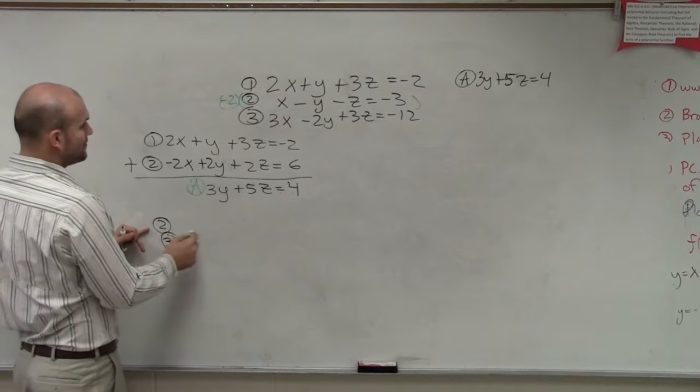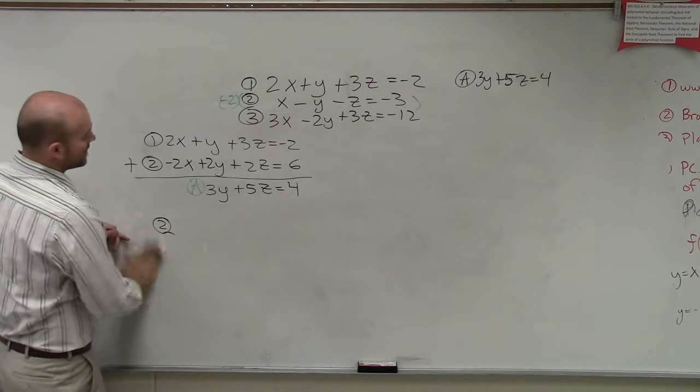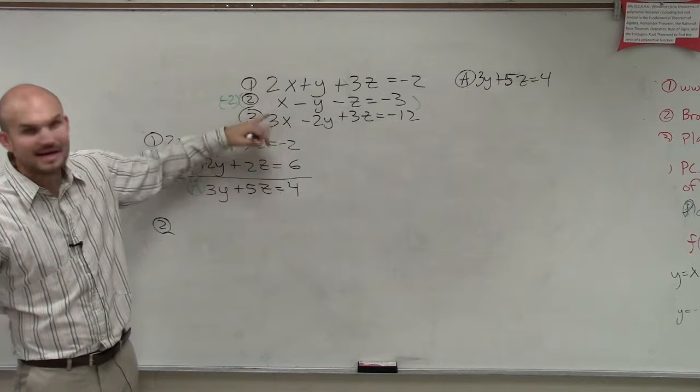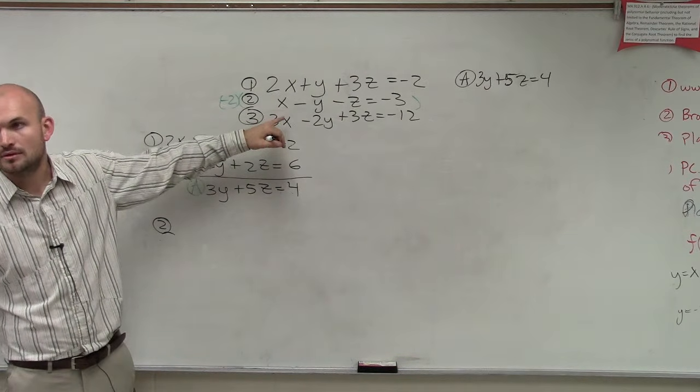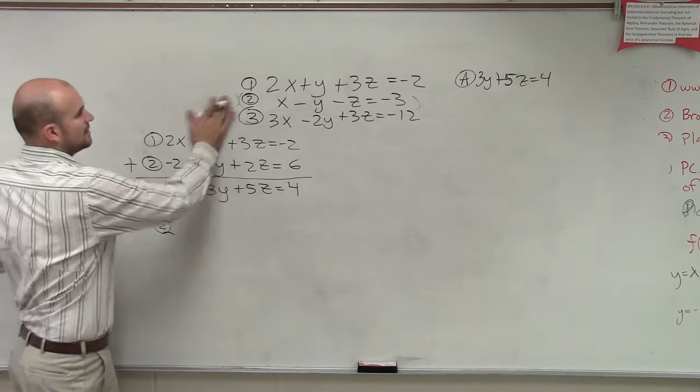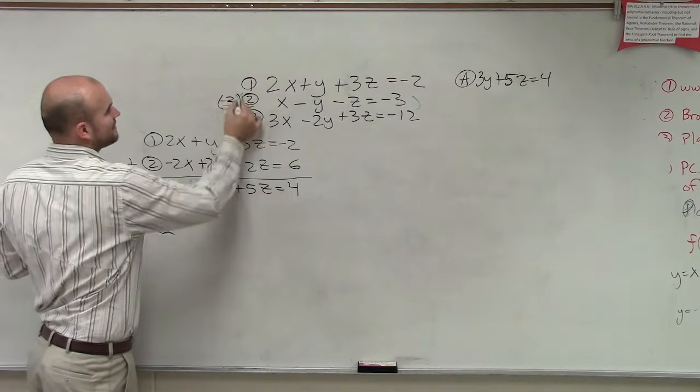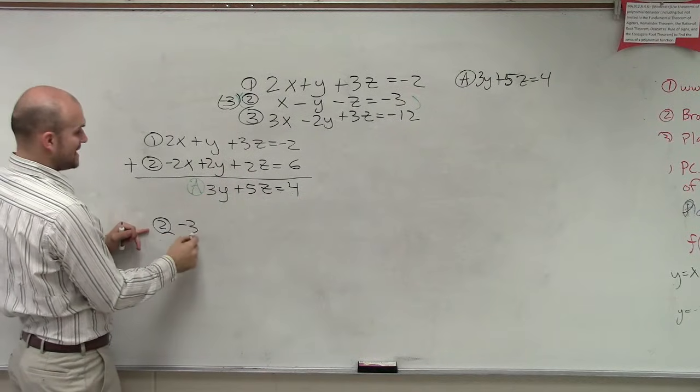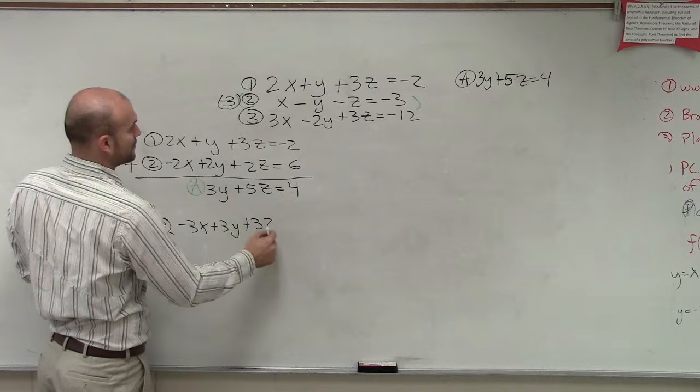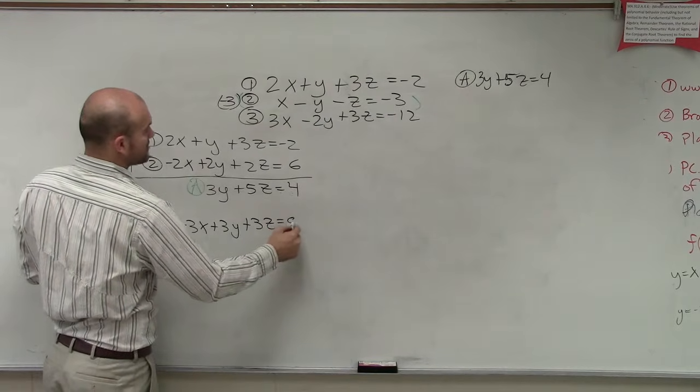So now I'm going to take equation two and equation three. So equation two, well, let's write out equation three. All right. So between equation two and equation three, to eliminate x, what do I need to do to equation two? Multiply it by, let's call it by my negative three this time, right? Because if I multiply it now by negative three, I'm now going to get negative 3x plus 3y plus 3z equals positive 9.